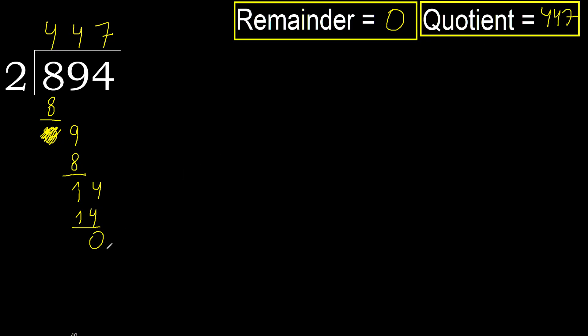Remainder is 0, therefore 894 divided by 2 is 447.